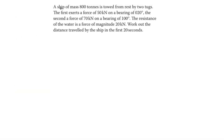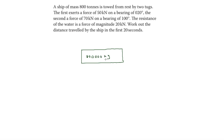The final question: a ship of mass 800 tonnes is towed from rest by two tugs. The first exerts 50 kN on a bearing of 020, and the second 70 kN on a bearing of 100 degrees. Water resistance is 20 kN. We need the distance travelled in the first 20 seconds. Drawing a diagram, 800 tonnes is 800,000 kg. The 50,000 N force is at bearing 20, and the 70,000 N force is at bearing 100 (10 degrees past east).